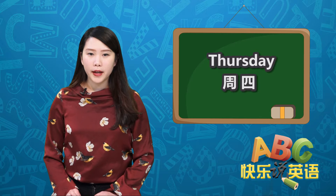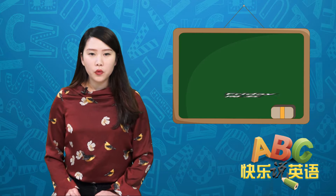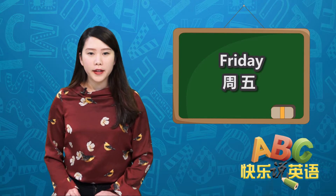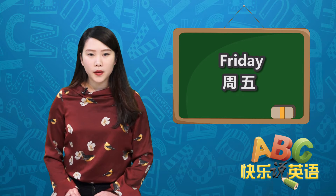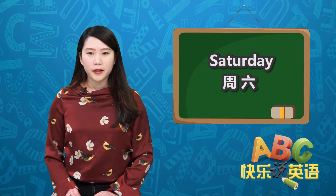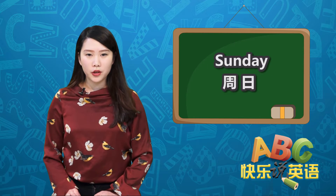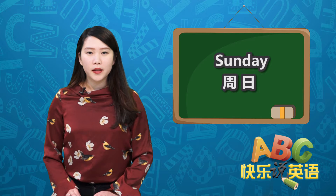因为你在约时间的时候可能会约周一到周日这其中一天，所以我们来介绍一下这七天的说法：周一是 Monday，周二是 Tuesday，周三是 Wednesday，周四是 Thursday，周五是 Friday，周六是 Saturday，最后周日是 Sunday。